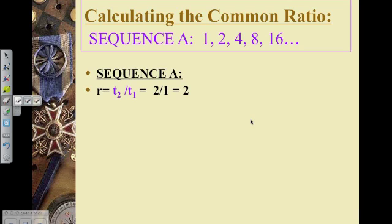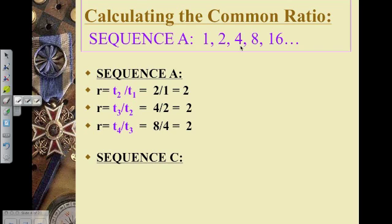For this particular sequence, T2 divided by T1 is equal to 2. And if you notice, T3 divided by T2 is also equal to 2. The fourth term divided by the third term is also equal to 2, and so on and so on.